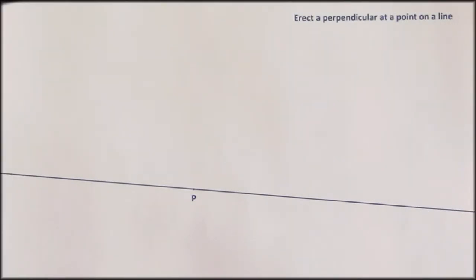For this construction I have a straight line with a point marked on it, P, and I'm going to draw a line which is perpendicular to the one I've got going through P. That's called erecting a perpendicular at that point.